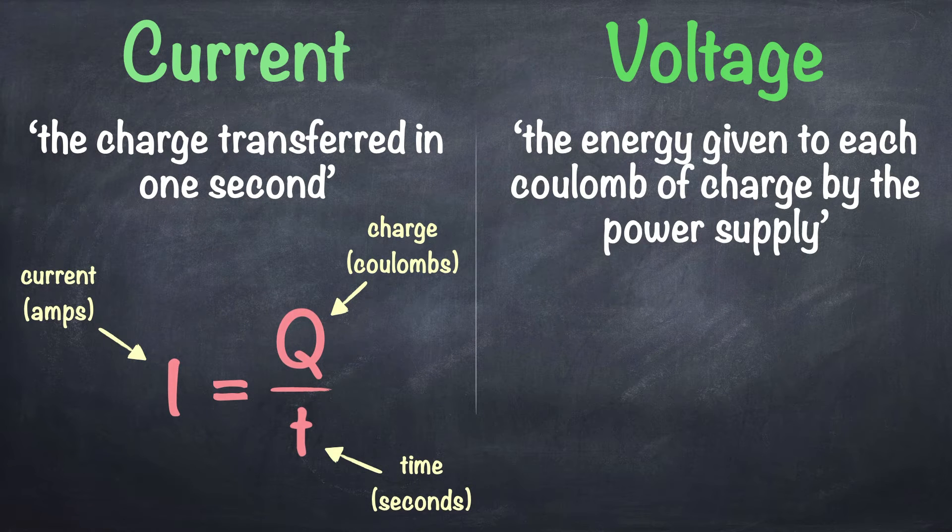Voltage is defined as the energy given to each coulomb of charge by the power supply. So try to memorize these definitions as they're written here. But basically, current is related to the number of electrons passing a point in one second and voltage is related to the energy that the electrons have.